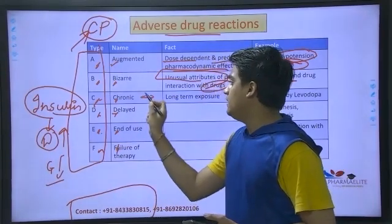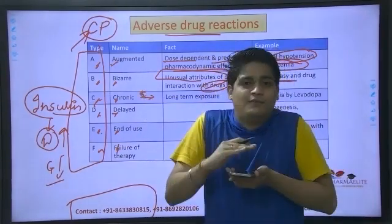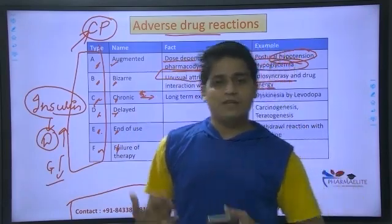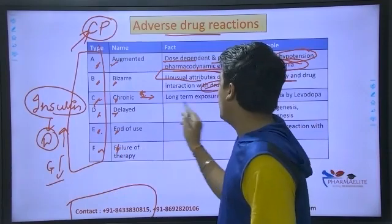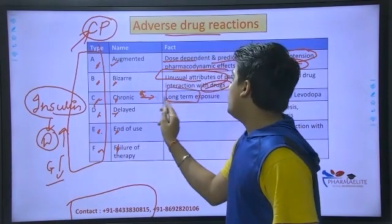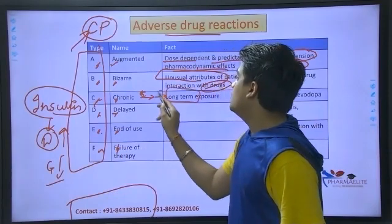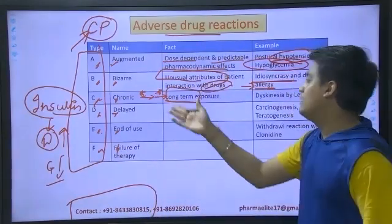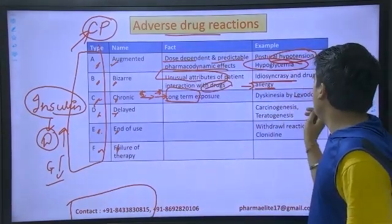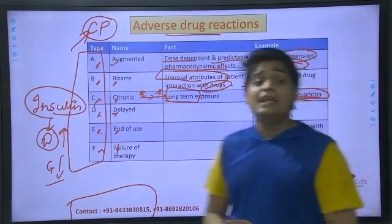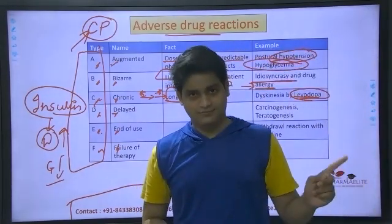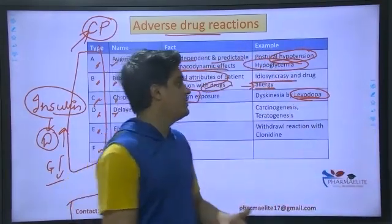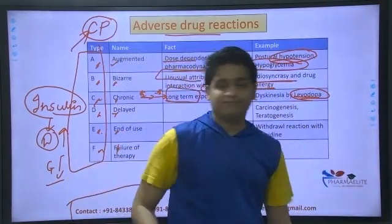If you talk about Chronic adverse drug reactions, chronic means long time. So chronic ADR is basically linked to long-term exposure. If you are continuously taking a drug for diabetes or blood pressure, you can face chronic ADR. For example, levodopa, which is an anti-Parkinson drug — dyskinesia can occur if you take it for a longer time.